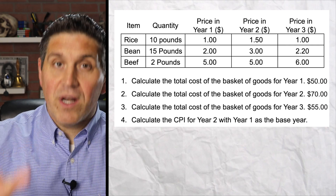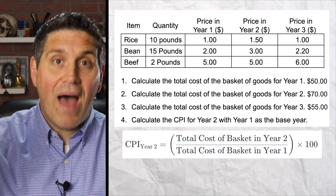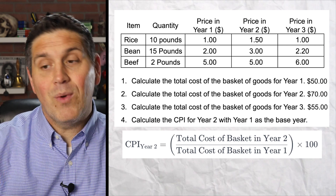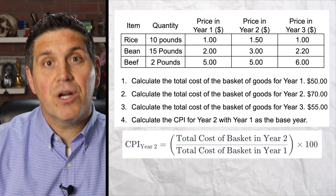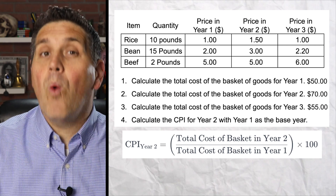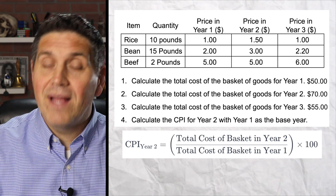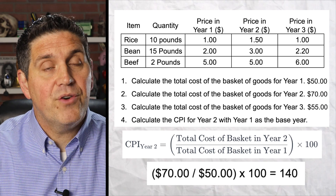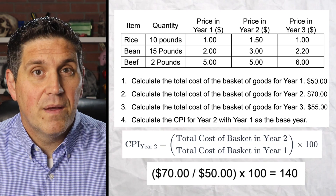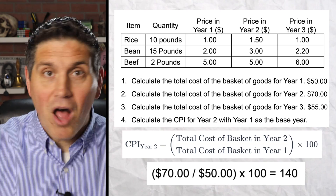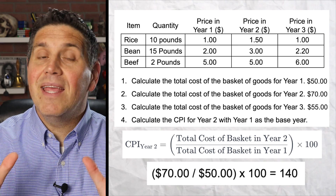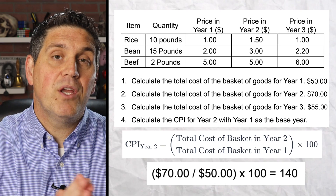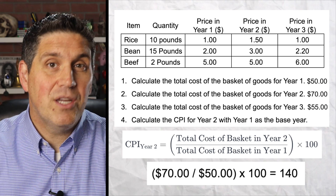For question four, you're going to need the equation for the CPI, which is the value of the market basket for the year you're looking at divided by the value in the base year times 100. Since year one is the base year, it's $70 divided by $50 times 100, which gives you 140. And remember, that's not a dollar amount and it's not a percentage. It's an index number telling you prices increased 40% between year one and year two.